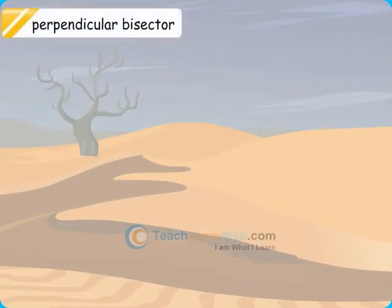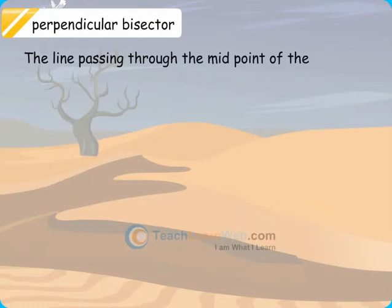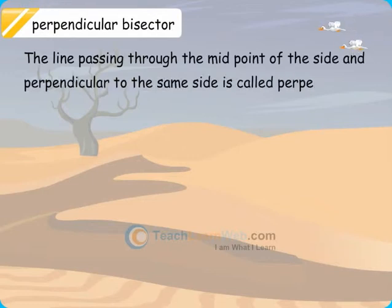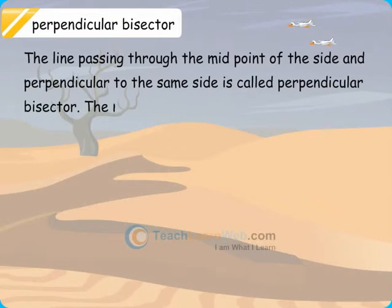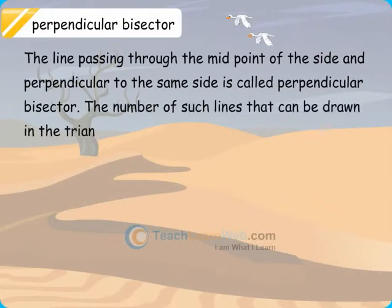Perpendicular Bisector: The line passing through the midpoint of the side and perpendicular to the same side is called perpendicular bisector. The number of such lines that can be drawn in the triangle is 3.